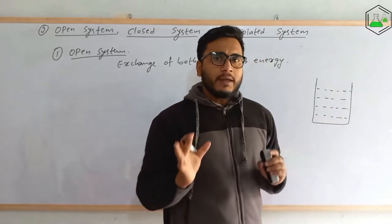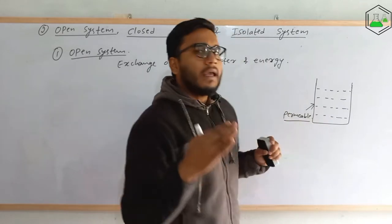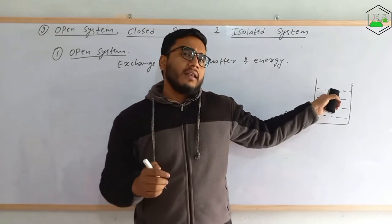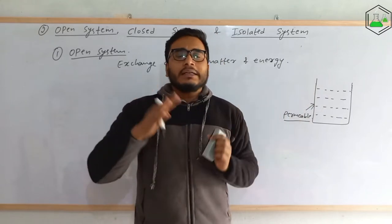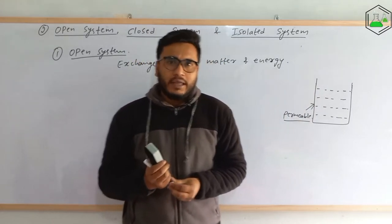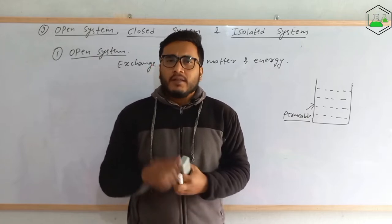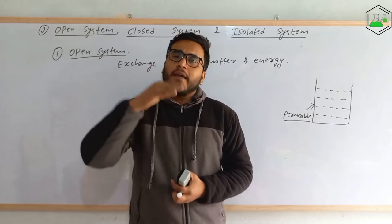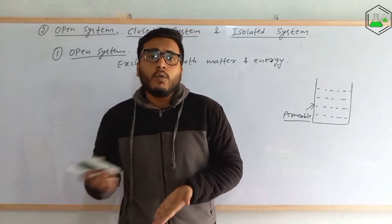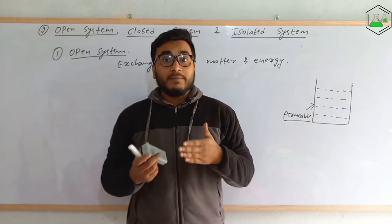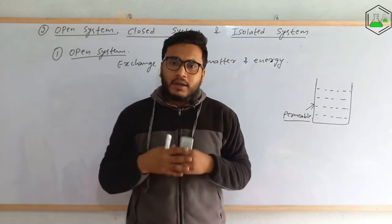If this boundary is permeable, that means anything can be exchanged — matter as well as energy will be exchanged. They will either gain or lose with the surrounding. An example is if you take hot water in a cup or glass: after some time, a little amount of water evaporates and the volume decreases, and energy also gets transmitted — the hot water gets converted into cold water. So matter as well as energy has been exchanged, and the boundary is permeable. That is called an open system.